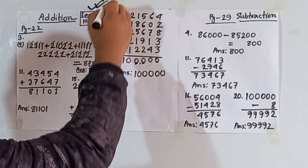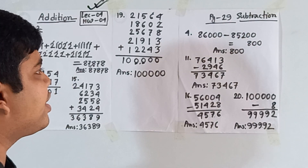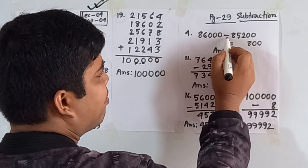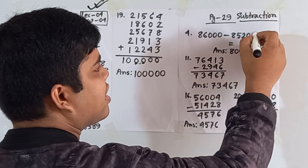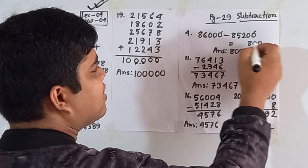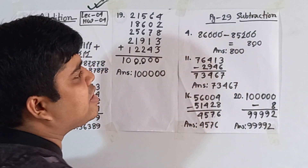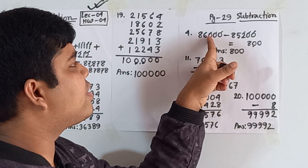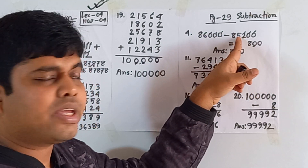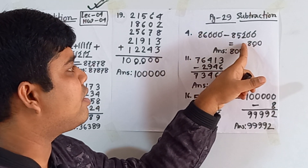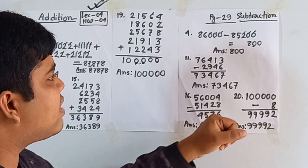This is addition. Now we shall solve subtraction from page number 29. First question: 86,000 minus 85,200. We subtract the ones place: 0−0=0, then 0−0=0. For the hundreds place, 0 is smaller than 2, so we borrow — 10−2=8. That one is added to 5, making 6; 6−6=0. Then 8−8=0. No need to write leading zeros. So 800 is the answer.